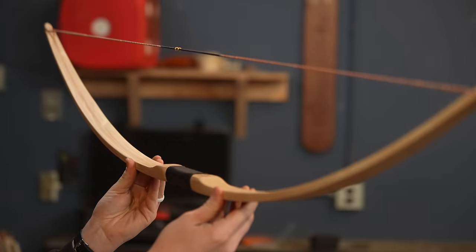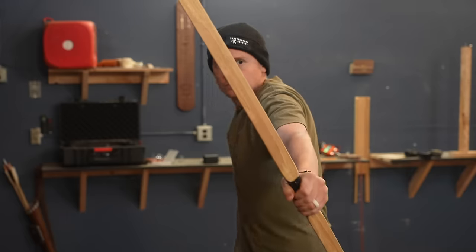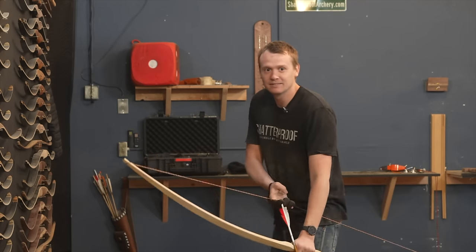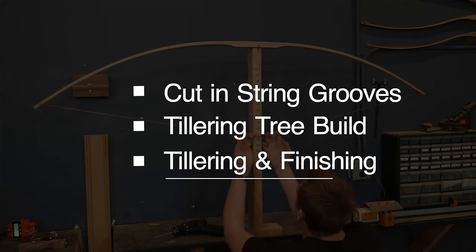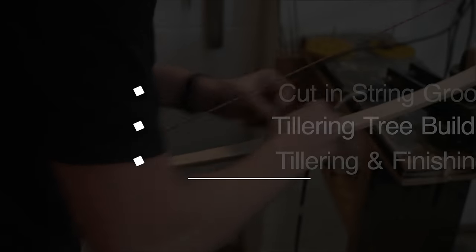If you want to make an amazing hickory bow that's very accurate with minimal tools and time, this video's for you. We're going to cut the string grooves in first, then I'm going to show you how to build a tillering tree, and then finally how to tiller the bow and finish it.